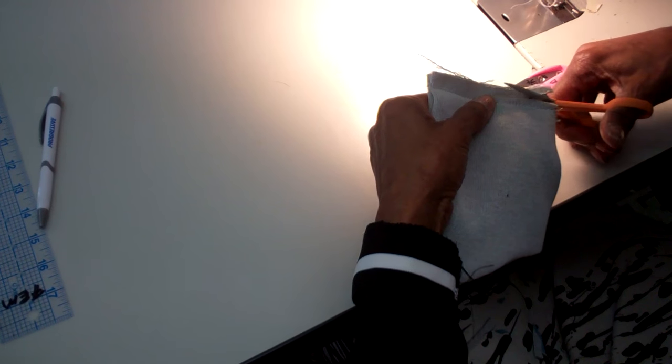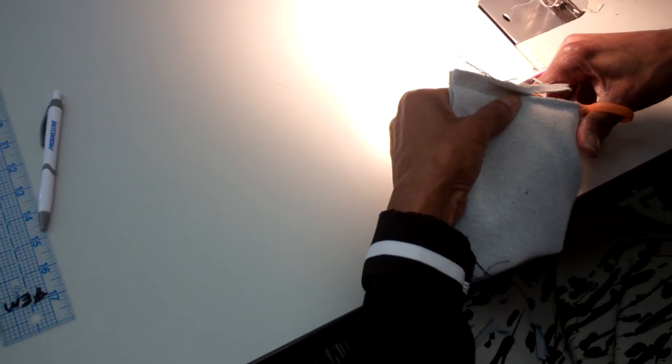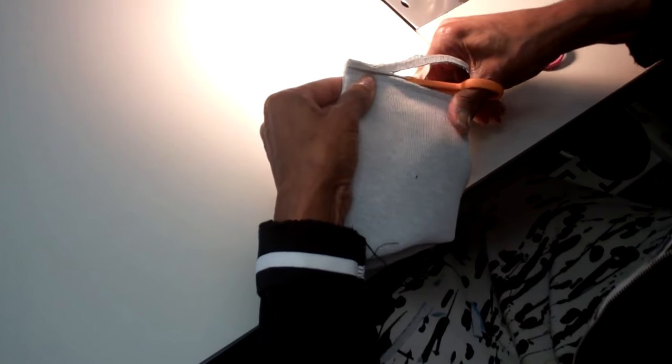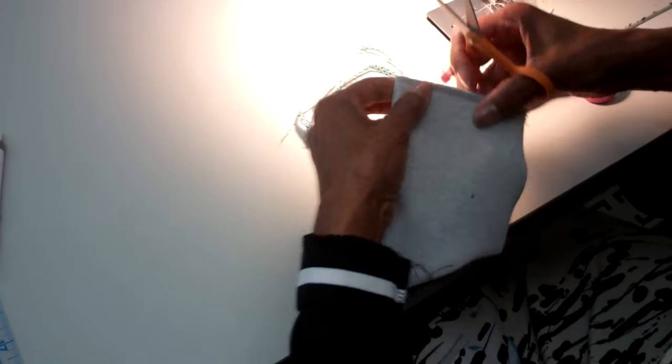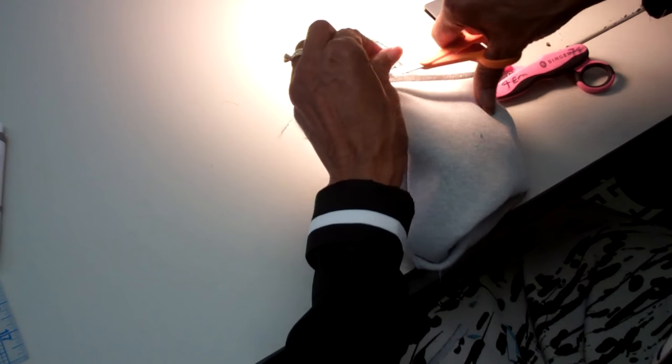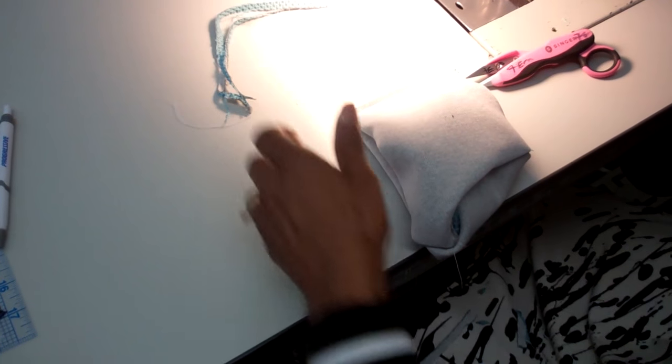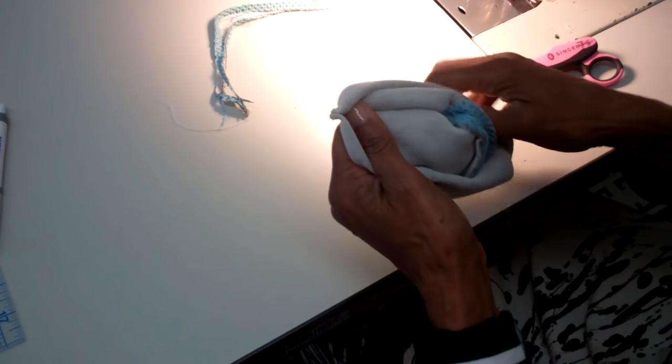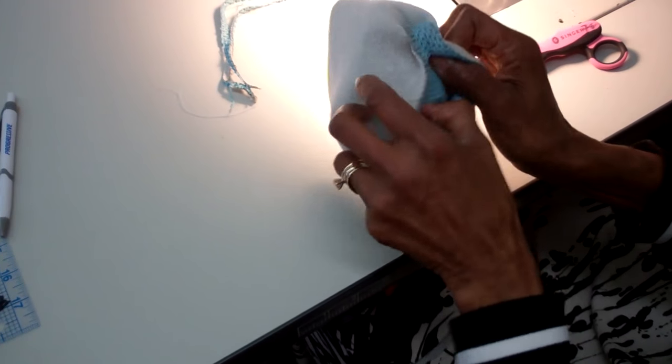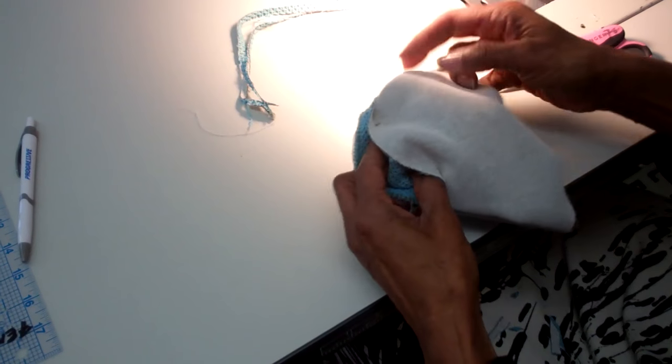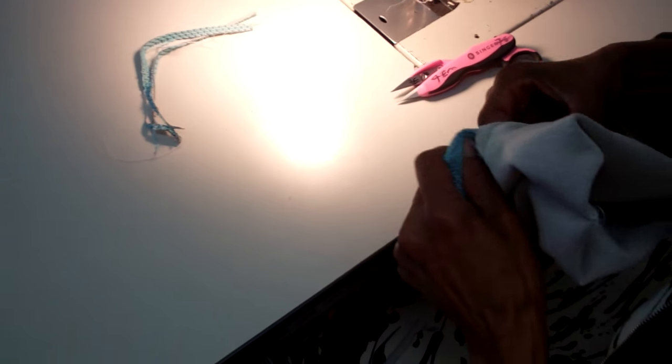And then trim half of the seam allowance away. I never trim more than half of my seam allowance away. On my garments, nothing. Don't trim too much. Might unravel and fall apart. There's the mask. So now we're going to push it all back through our opening. Seems like it's a little easier this time.